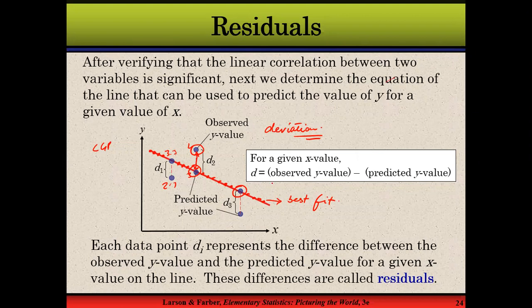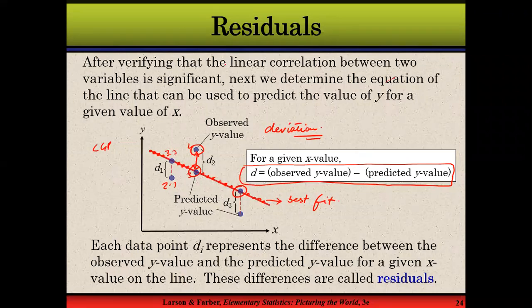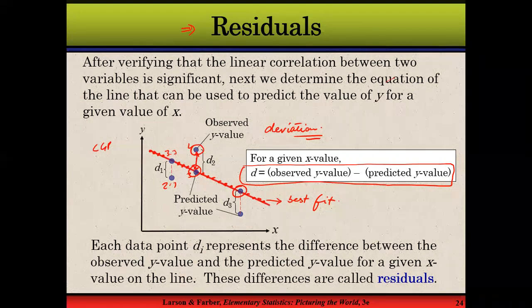If you remember when we calculated the variance, we saw that the data value is going to deviate from its mean. The same concept applies here. These are the deviations. Data values deviate from predicted values. So the deviation is equal to observed values minus predicted values. This is the distance of these two values. We call it residuals.